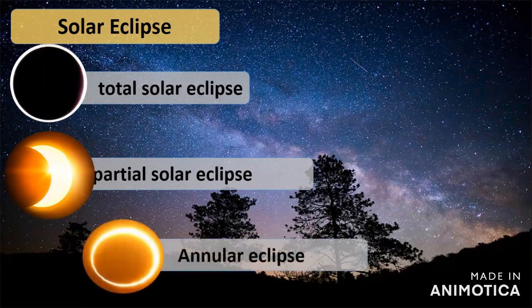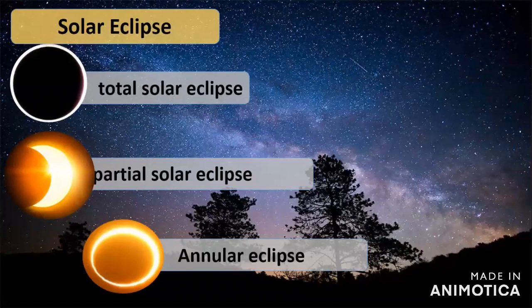An annular eclipse happens when the moon is farthest from earth. Because the moon is farthest away, it appears smaller. These are the different solar and lunar eclipses, and that ends our lesson for today.